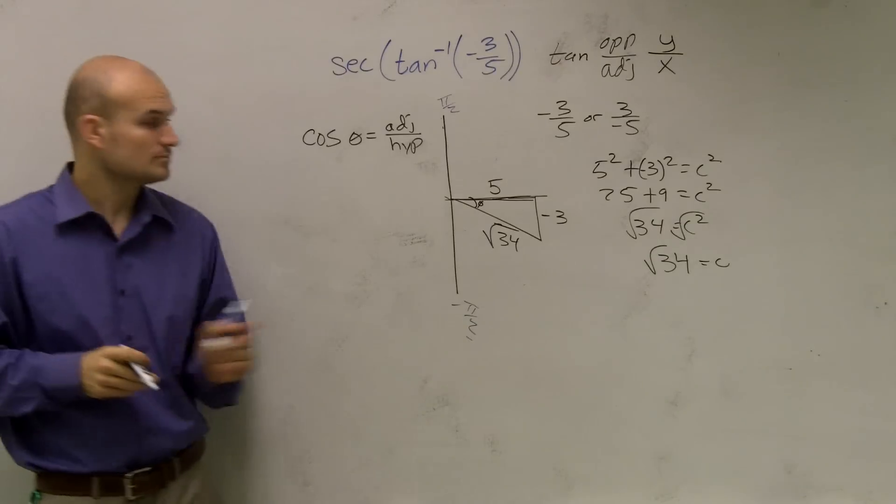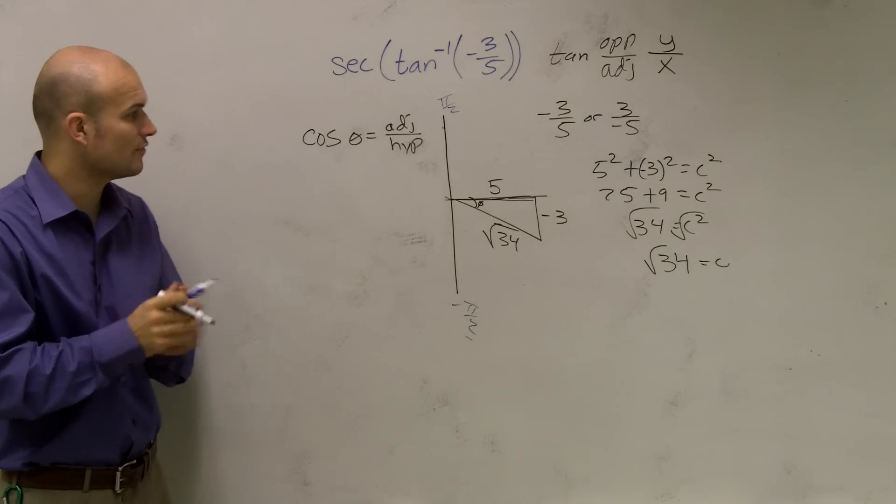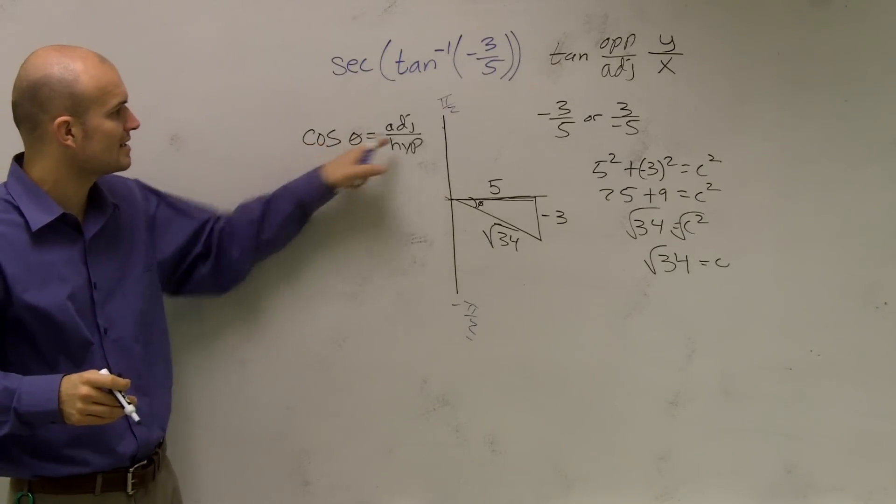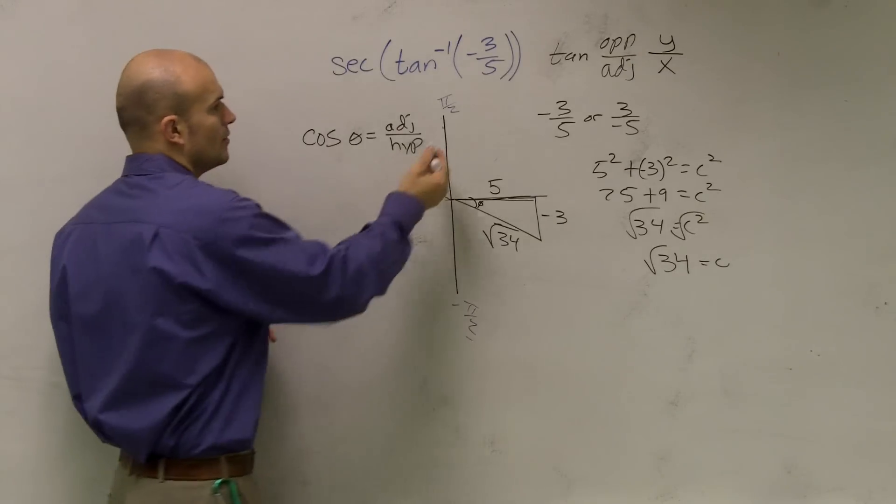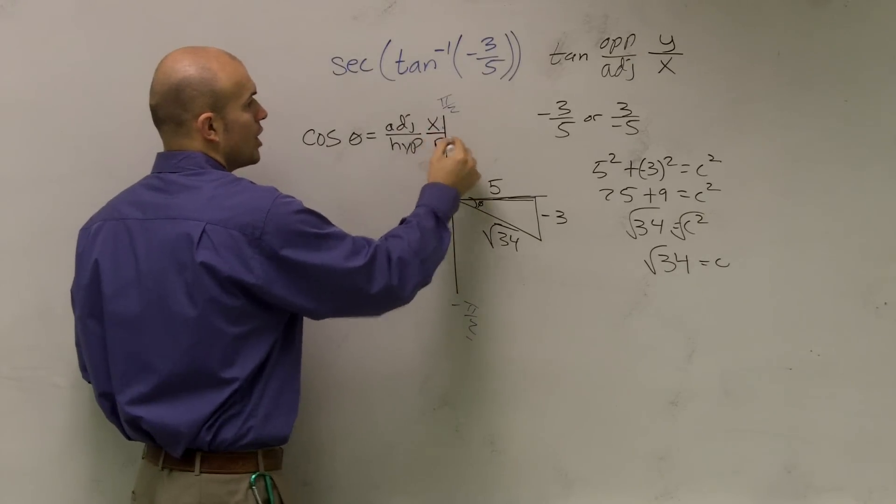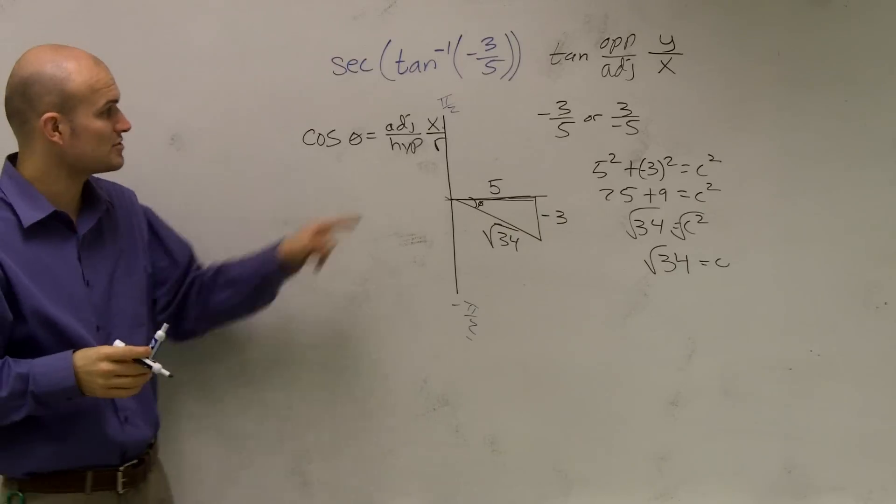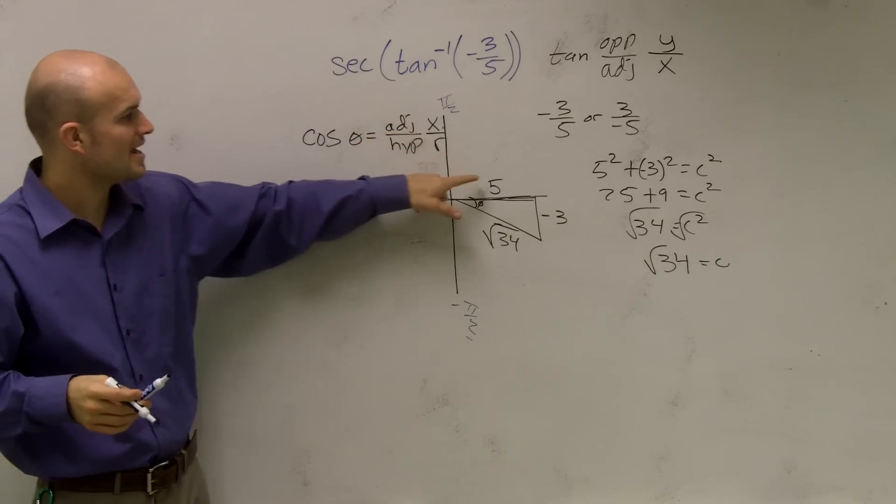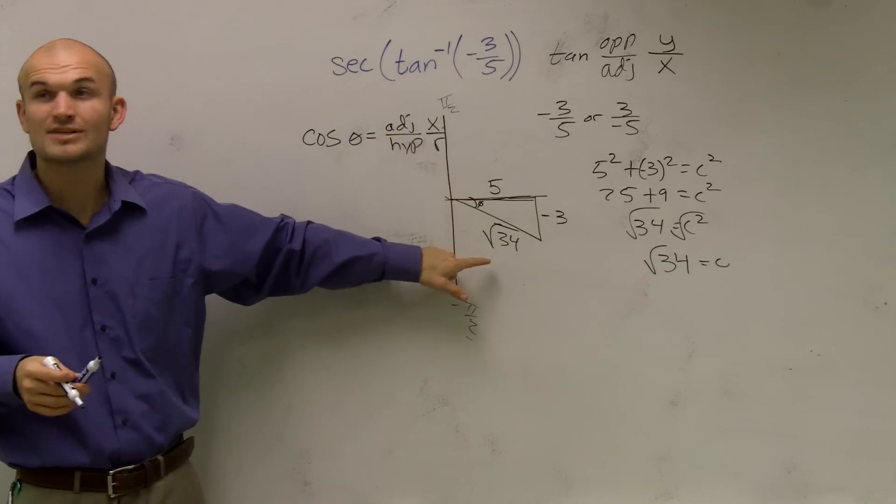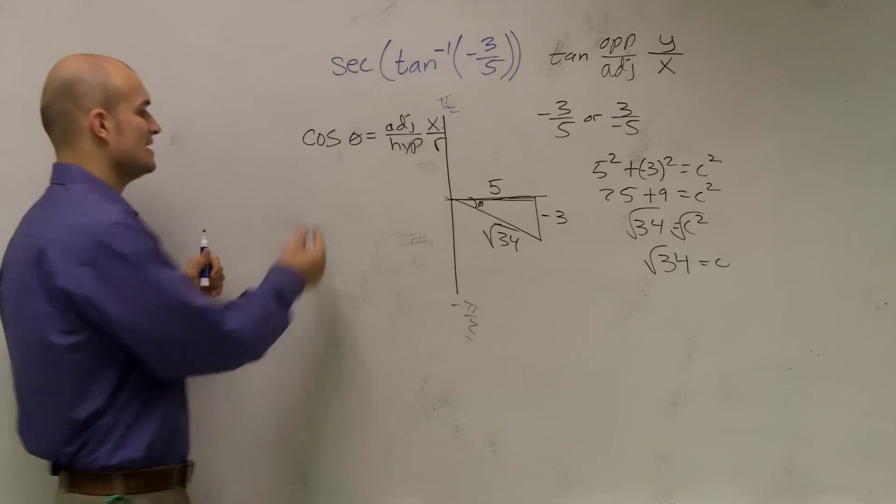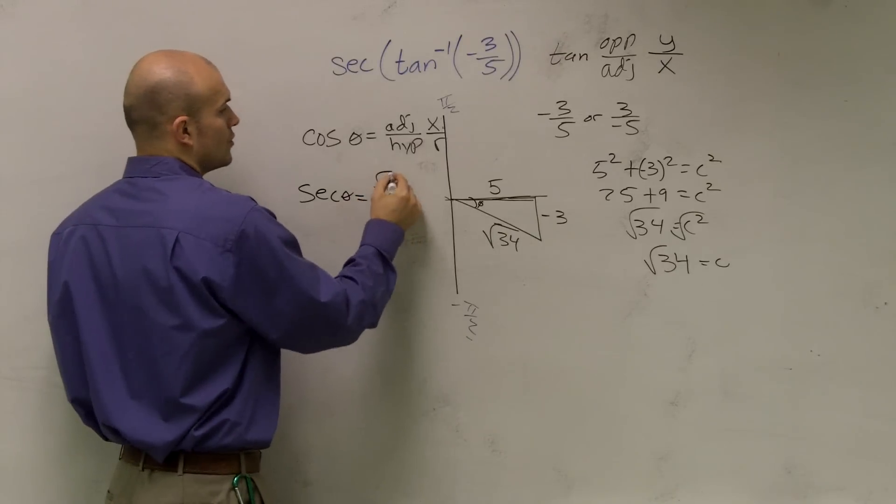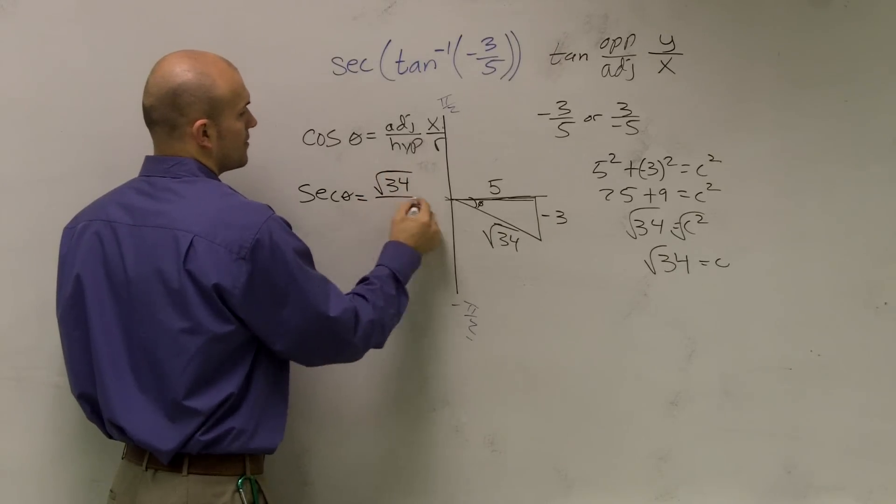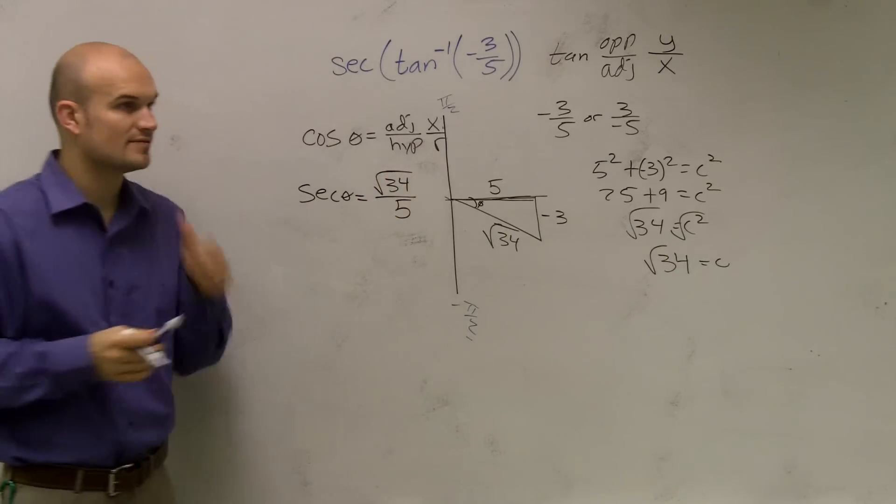So now I want to take the root of 34. And what I notice is, remember, cosine is going to be your adjacent, or we could always say it's your x over your r. It doesn't really matter which way you want to think about it. So I have my x over my r. But we're not trying to find cosine. We're trying to find the reciprocal of that, which is secant. So my secant theta is going to be my radical 34 over a positive five.